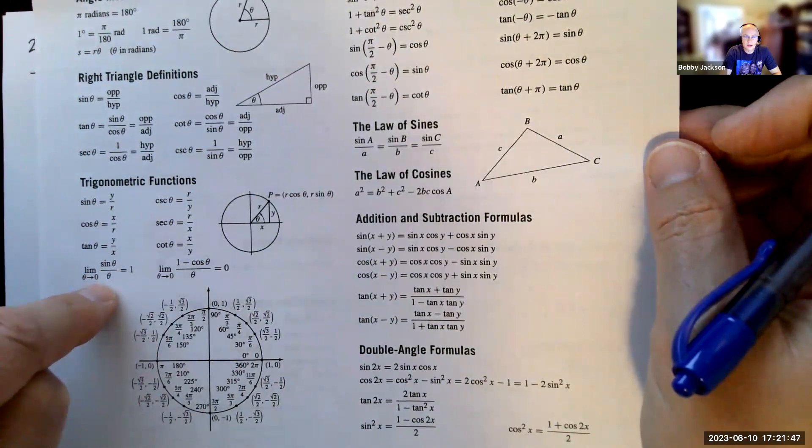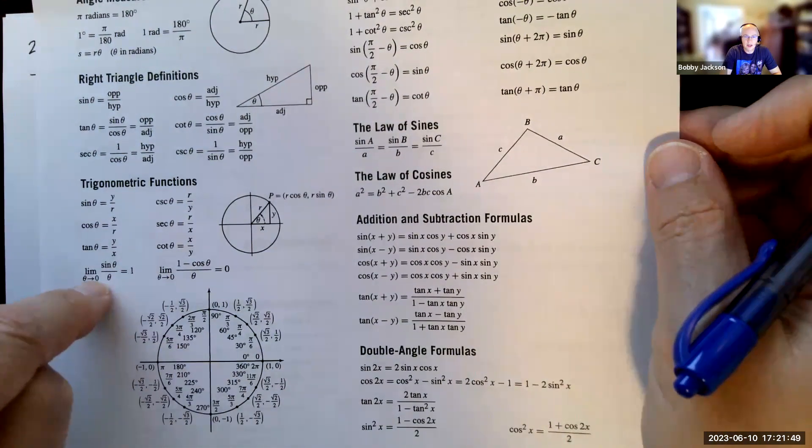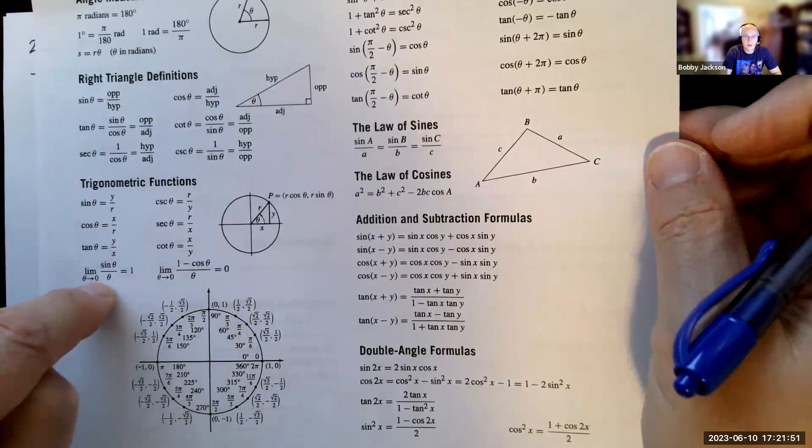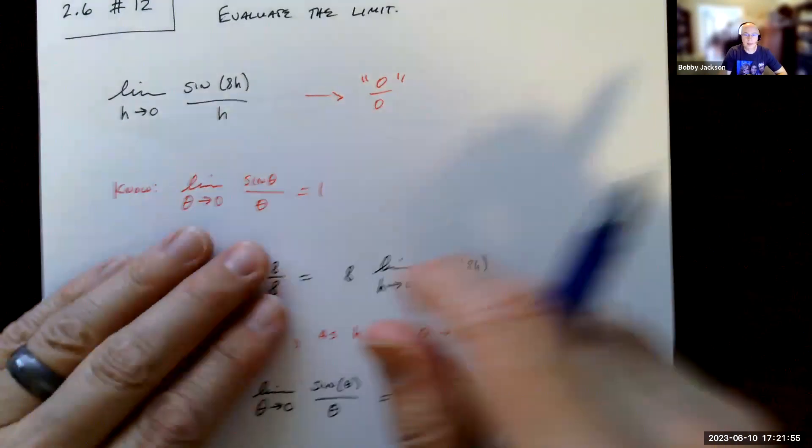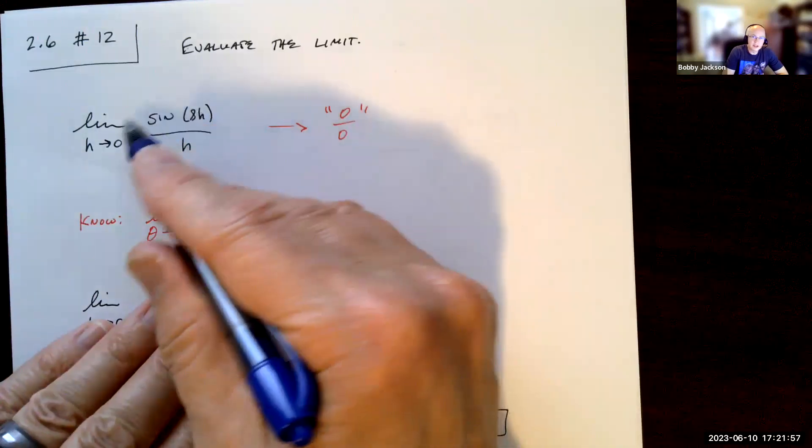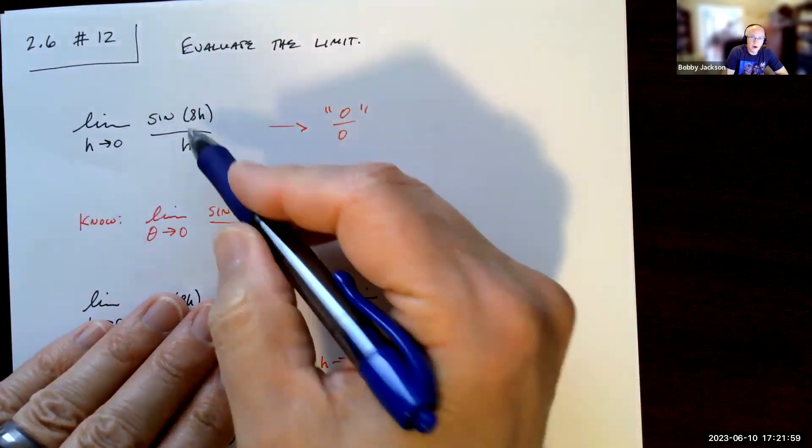And this is the one we're going to use. I proved both of these in lecture, but this is the one we're going to use now. Okay, so is this limit in the same form? Well, I've got sine of 8h over h.